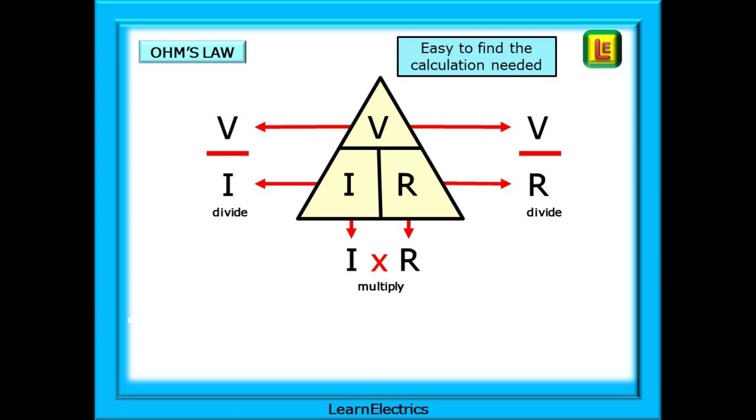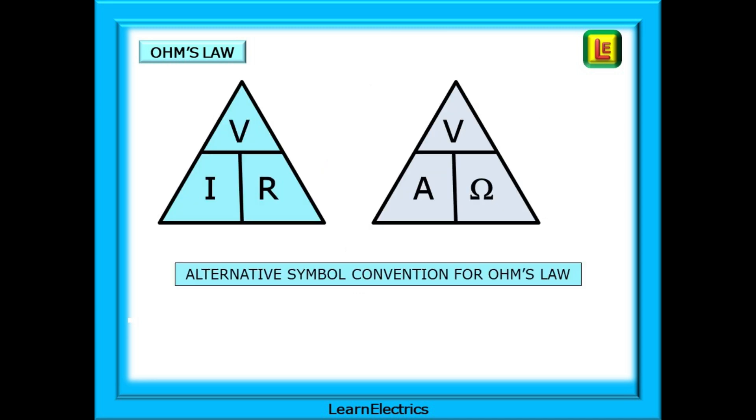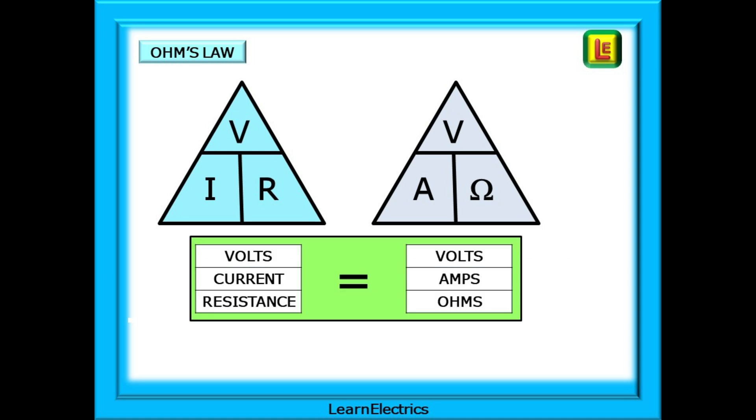So we have V over I, V over R and I times R. We've used V, I and R in the triangle but some people prefer to use the alternative symbols of V, A and Ohms. It matters not. Whichever way you've been taught is all the same.